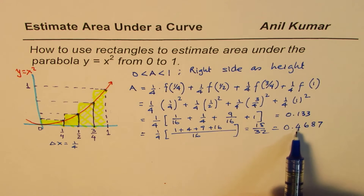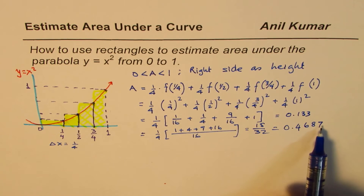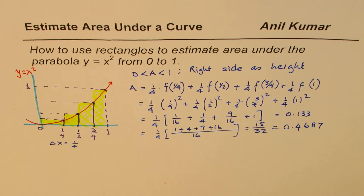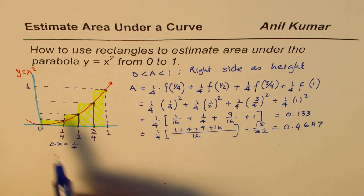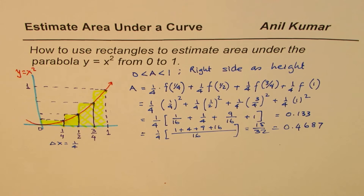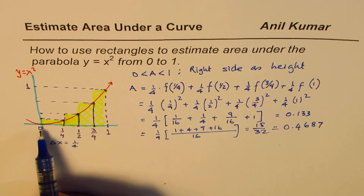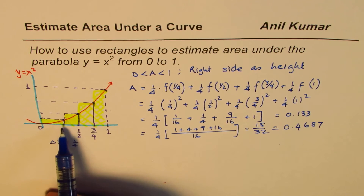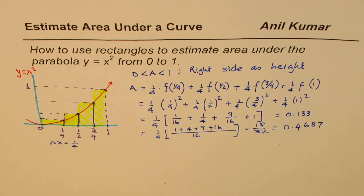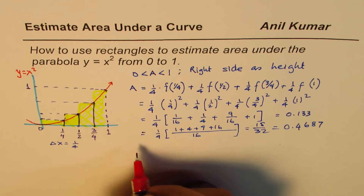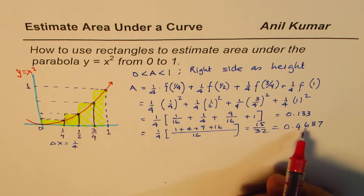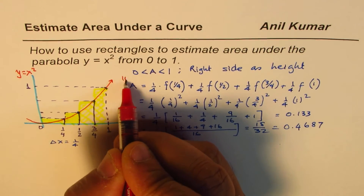That gives us an approximate estimate of 15/32, which in decimals is 0.4687. So this value of the area has been obtained by using the right side of the rectangles. This is the higher estimate.